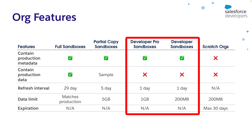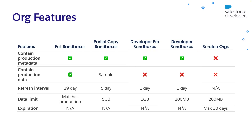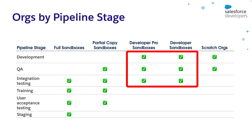These are great for other kinds of testing activities that can be run with just a subset of the available data. Developer and Developer Pro sandboxes copy metadata, but not data. You have to insert sample data yourself. These are great for development and integration testing, where we make sure that features developed independently work as expected when merged together.